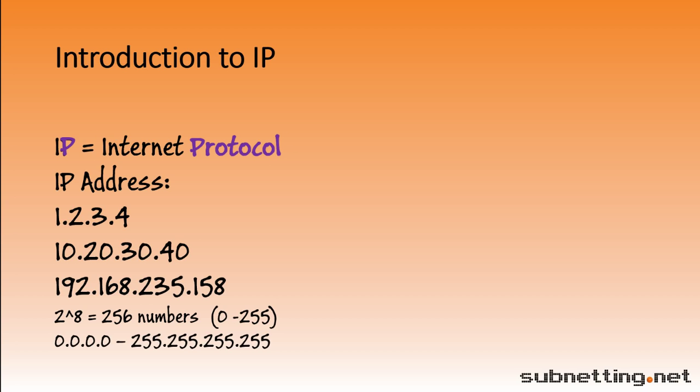There are two types of IP addresses in use today: IPv4 and IPv6. All of the addresses you've seen so far are IPv4 addresses. There are many differences between IPv4 and IPv6, but one of the main differences is the number of bits. IPv4 addresses have four octets of eight bits — four times eight is 32.